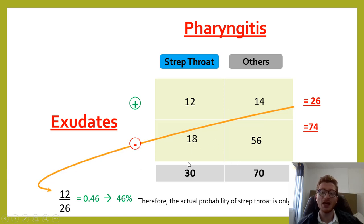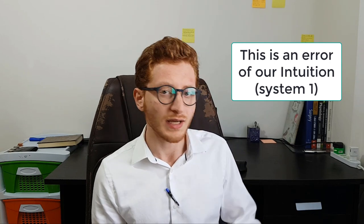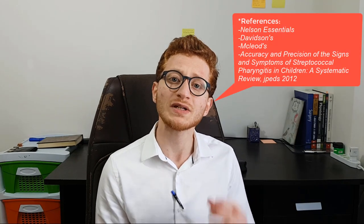After finishing these two examples — the taxi problem and the pharyngitis problem — we find that our initial thoughts or predictions may be inaccurate. We may inflate the true probability of something happening. In the taxi problem, some people think the chance the witness is correct is 80 percent, but the reality is much less. Similarly for pharyngitis, we may be too confident that the causative organism is strep and that we need to give amoxicillin, but the math shows the probability is much lower.